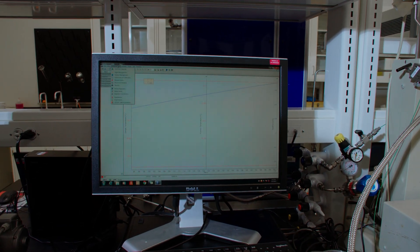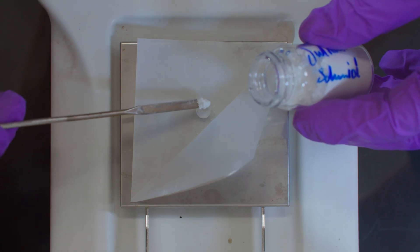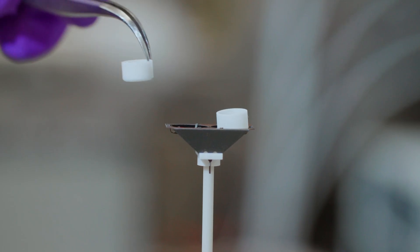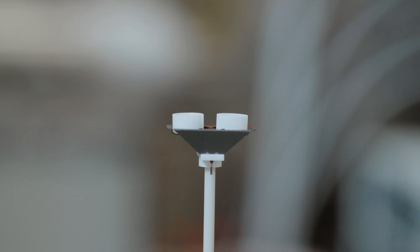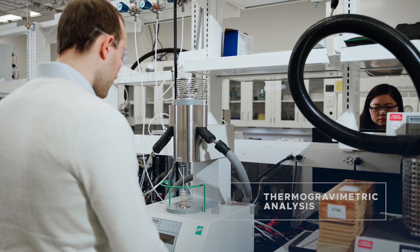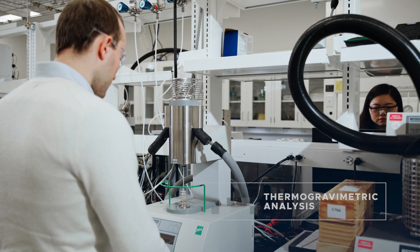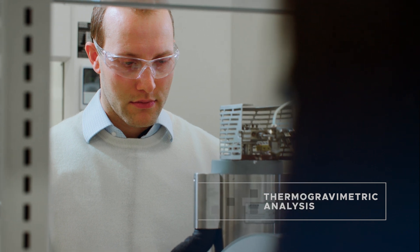The lab space also includes thermogravimetric analysis instruments, which measure how weight changes as a sample heats up. One has additional capabilities that allow researchers to study how the chemical makeup of the sample evolves over time as temperature and weight change.